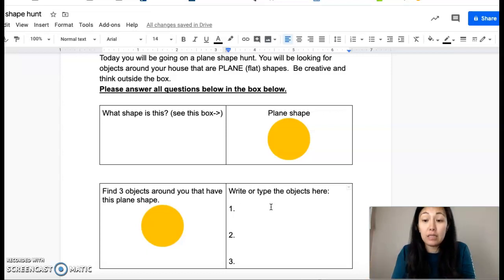No. Is it a solid shape? So please do not put something like a ball, golf ball, anything like that. We need to find something plain and flat. So what is something around your house that has a circle shape? You need to find three objects.